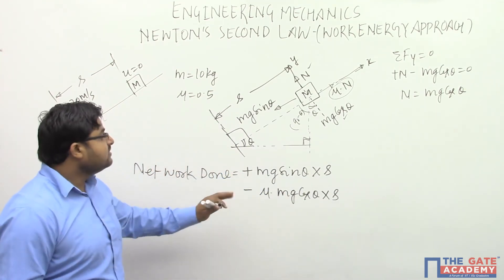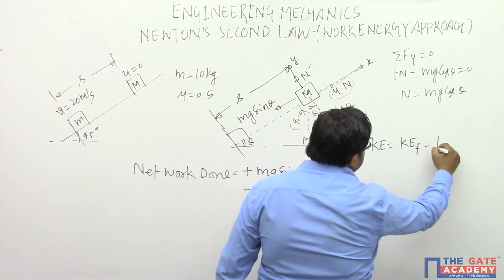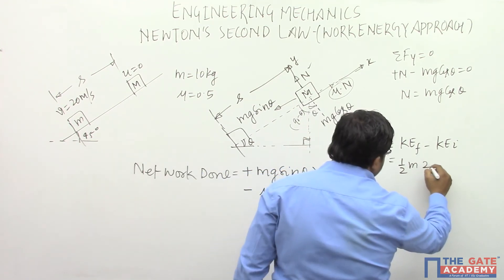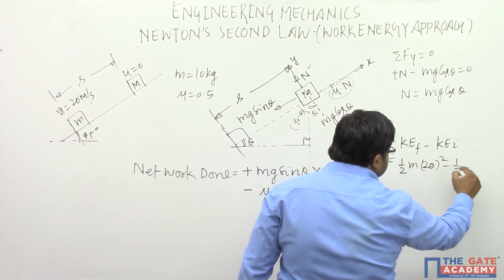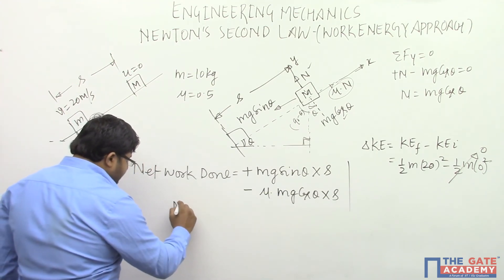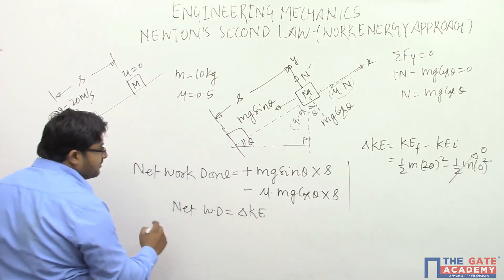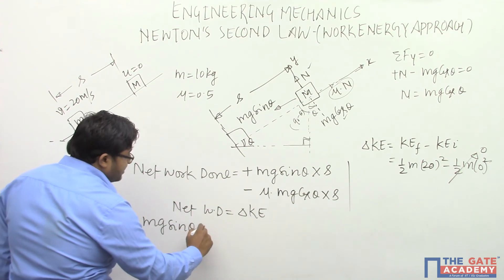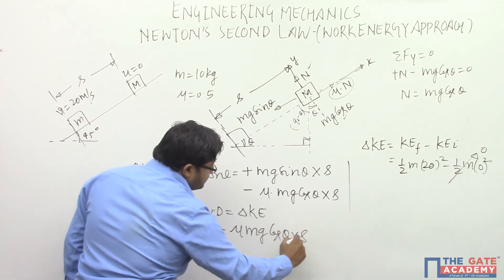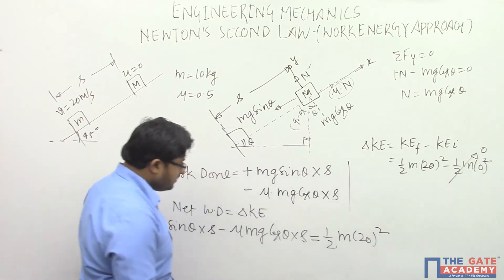This net work done must equal ΔKE, the change in kinetic energy: final kinetic energy minus initial kinetic energy. Final velocity is given as 20 m/s, so final KE = half·m·(20)². Initial velocity was zero, so initial KE = 0. By the work energy principle, net work done equals ΔKE: m·g·sin θ × S − μ·m·g·cos θ × S = half·m·(20)².